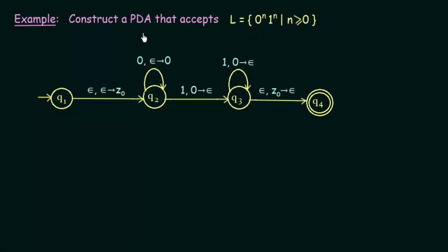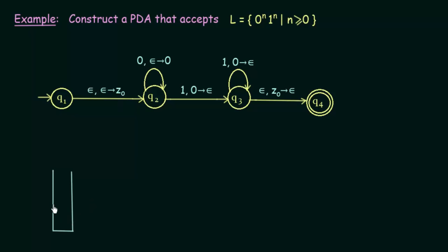Let us see how we can design the PDA for this. We start with an initial state Q1 — just like finite state machines, the arrow from nowhere pointing to a state represents the initial state. In Q1 we have the transition: epsilon, epsilon → Z0. Z0 is the first element we push into the stack.